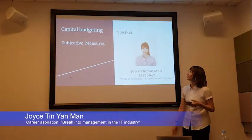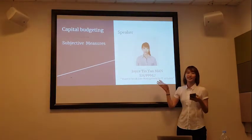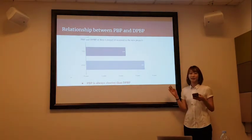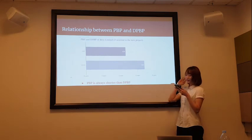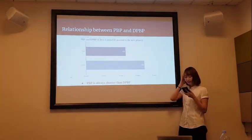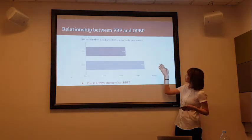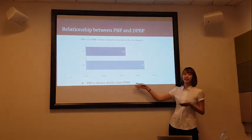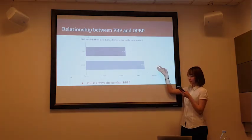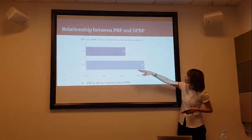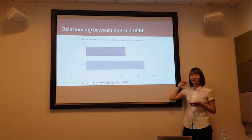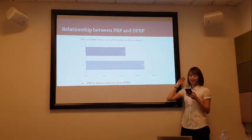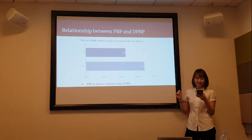Hi everyone, I'm Joyce, and we're going to talk about the subjective measures in capital budgeting. We can start with the relation of PVP and DPVP. PVP stands for the payback period. Both measures calculate the time needed to recover the original investment cost. But for the discounted payback period, it will also account for the time value of money. Because of this, PVP is always shorter than DPVP. From our calculations, it takes 2.33 years to cover the cost of the investment, while the DPVP states that it takes 3.43 years, proving that PVP is always shorter than DPVP.